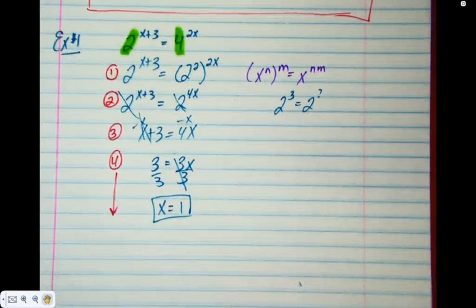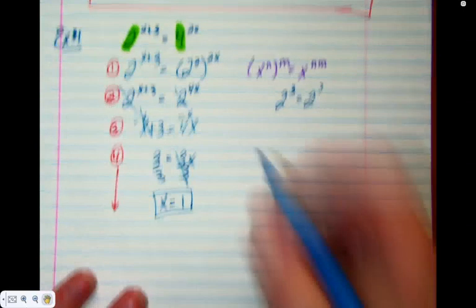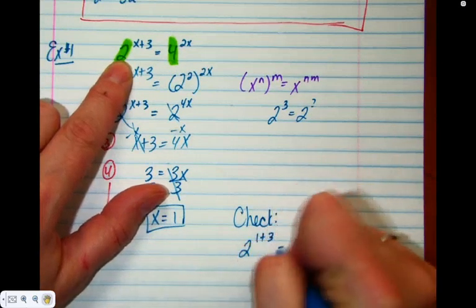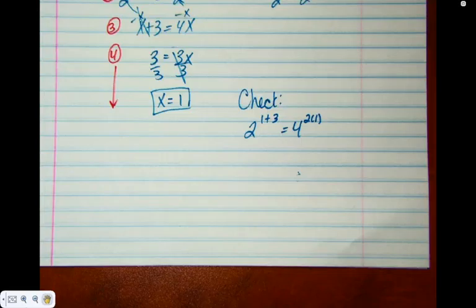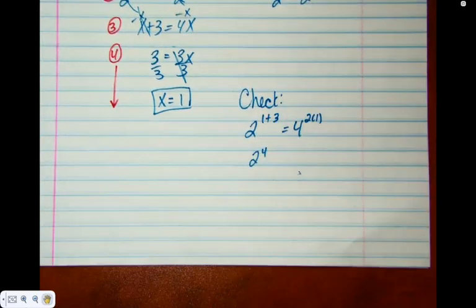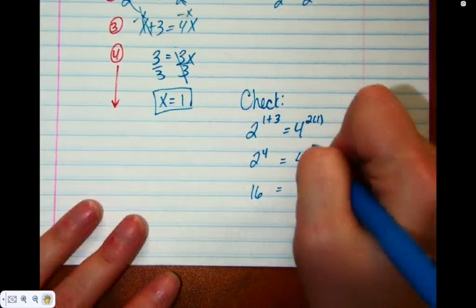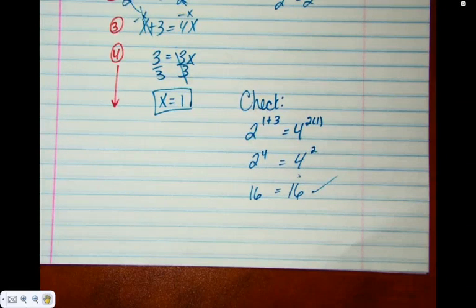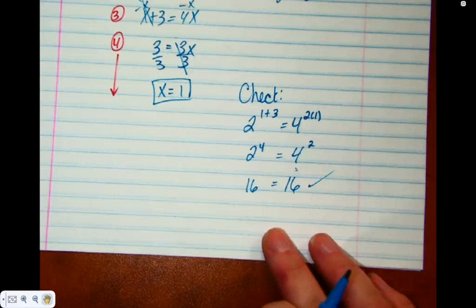The beauty about any kind of equation is if you have extra time, you can always check it. I don't recommend checking your first time through because you don't want to run out of time, but there's usually enough time to go back. Let's take our answer of 1 and sub it into both sides. 2^(1+3) = 2^4 = 16. On the other side, 4^(2×1) = 4^2 = 16. What's the conclusion? Has to be the correct answer because the two are equal.